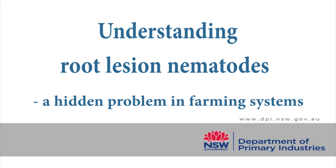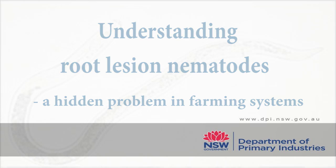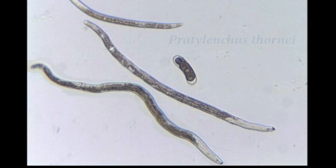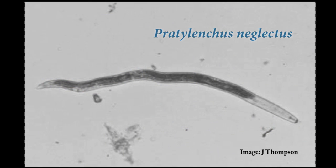Root lesion nematodes are tiny microscopic worms about half a millimetre in length that feed and reproduce in plant roots. This can lead to large yield losses in intolerant cereal and pulse crops. Two important species are Pratylenchus thornii and Pratylenchus neglectus. Either species may be found separately or together in mixed populations.